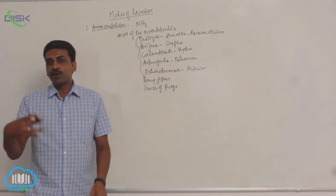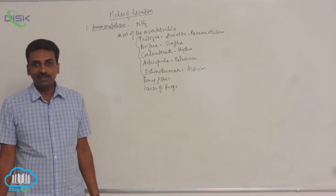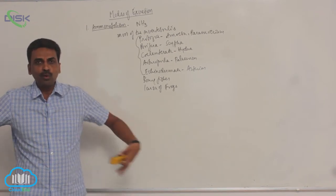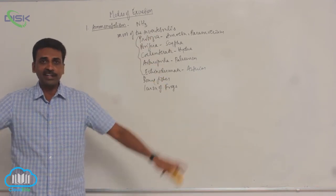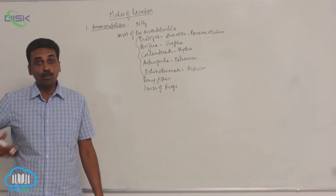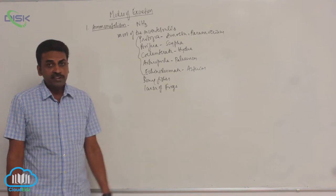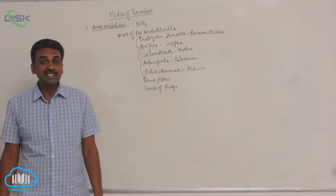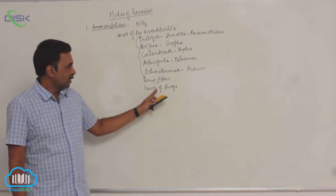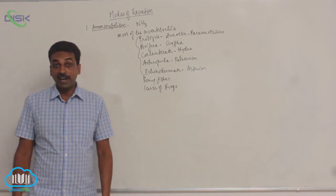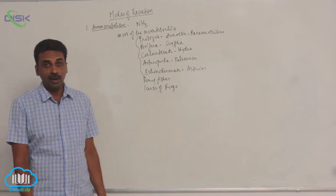Ammonia readily diffuses in water through the body wall, directly diffusing into the surrounding water in most invertebrates. In bony fishes, it diffuses out through the gills in the form of ammonium ions. Note that adult frogs excrete urea, but the tadpole larva of a frog excretes ammonia.